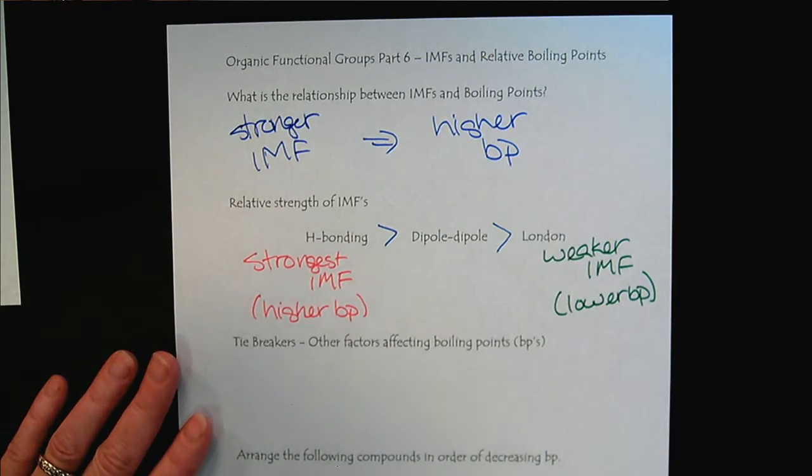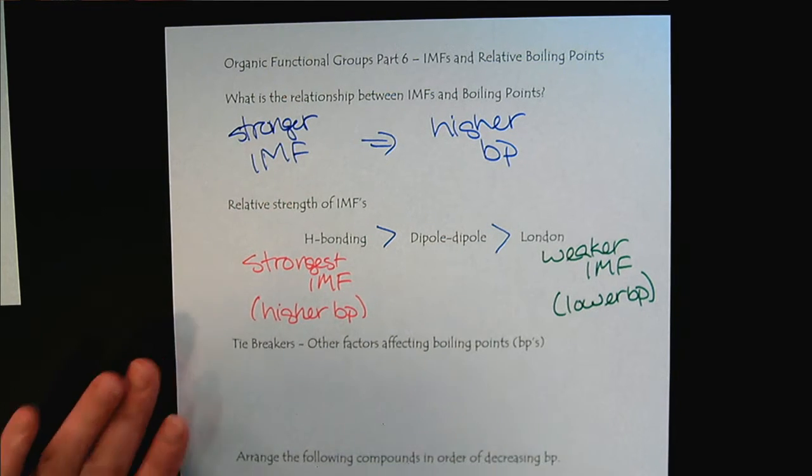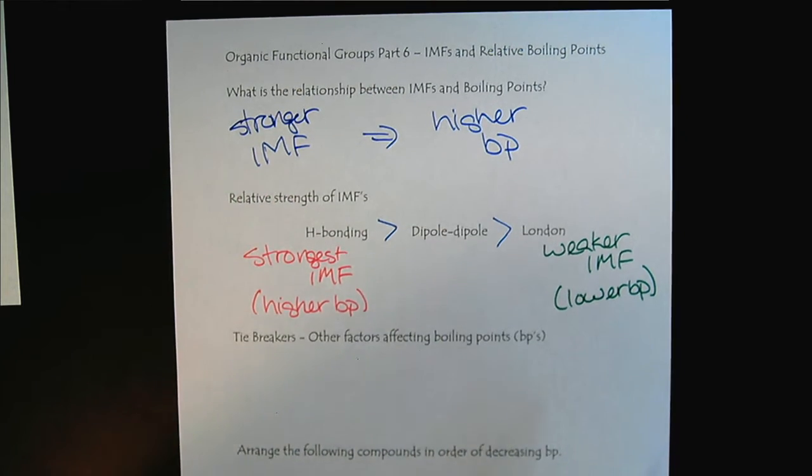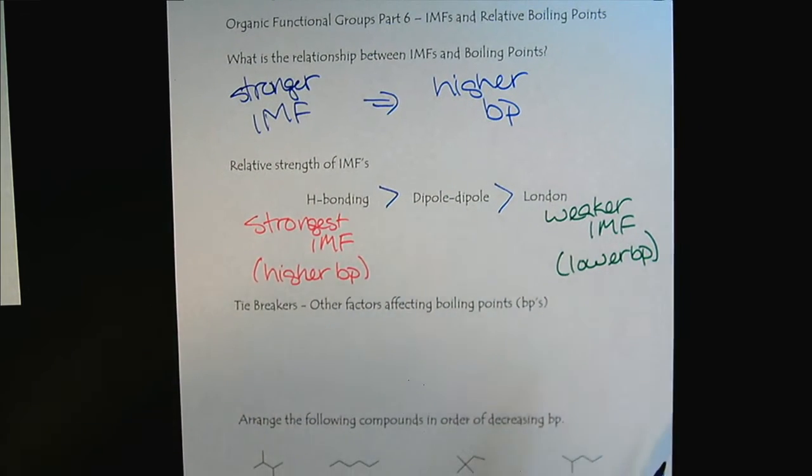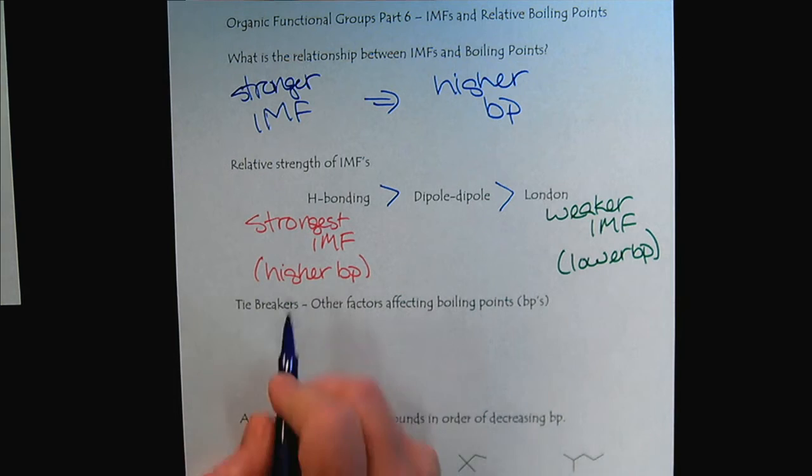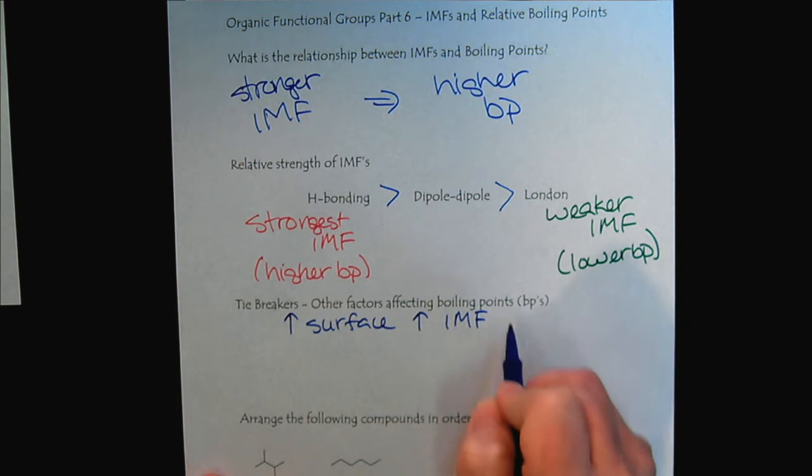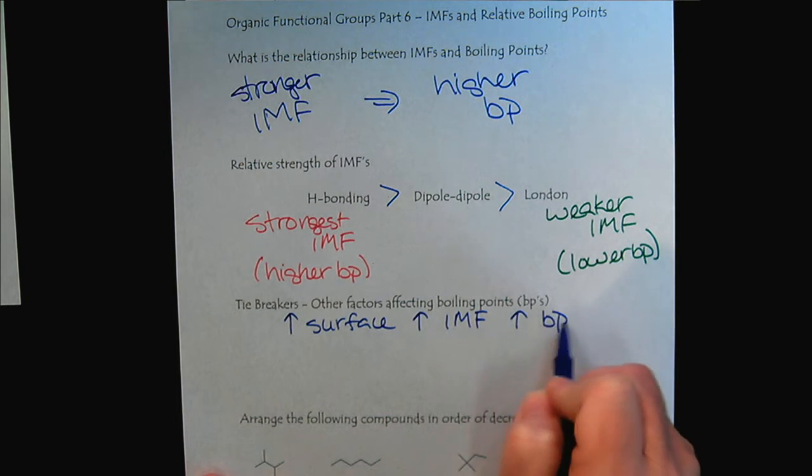Okay, and then when we have a tie, what do we do? So it's easy to compare compounds that have different intermolecular forces, but what do we do if there's a tie? Remember that it's all about increased surface area. Increases the strength of the IMF, which increases the boiling point.